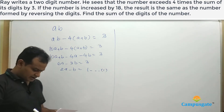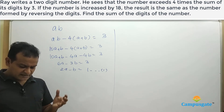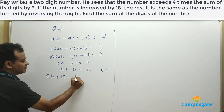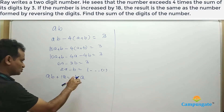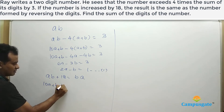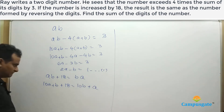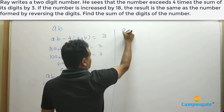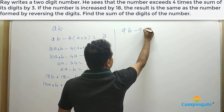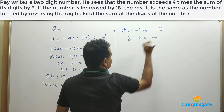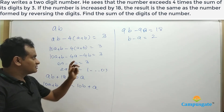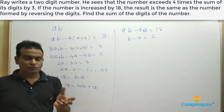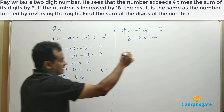Now let us look at the second equation. It is given that if the number is increased by 18, the result is the same as the number formed by reversing the digits. That means AB when added to 18 will give you BA. So we write: 10A plus B plus 18 equal to 10B plus A. Sending the variables to the right-hand side, we get 9B minus 9A equal to 18, therefore B minus A equal to 2. This is equation 2.